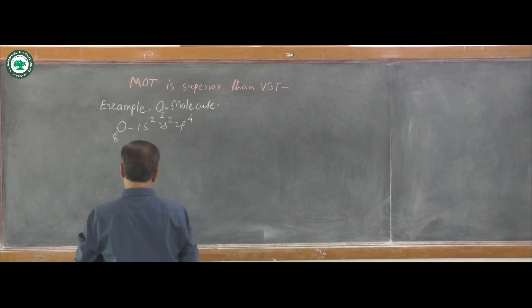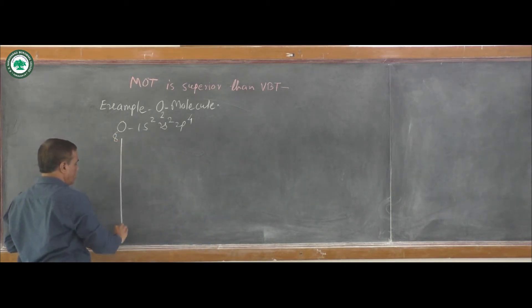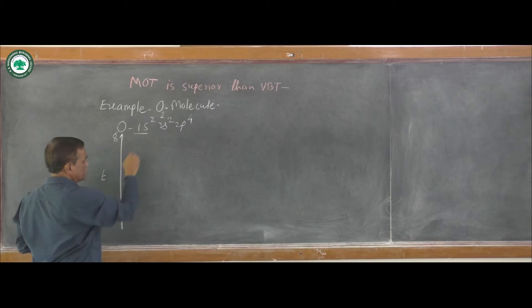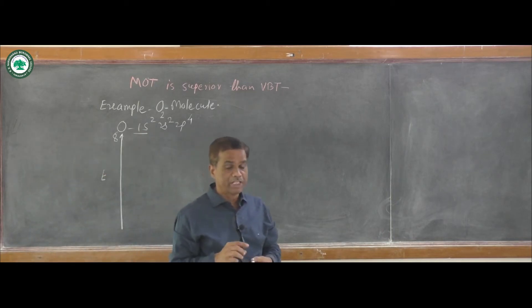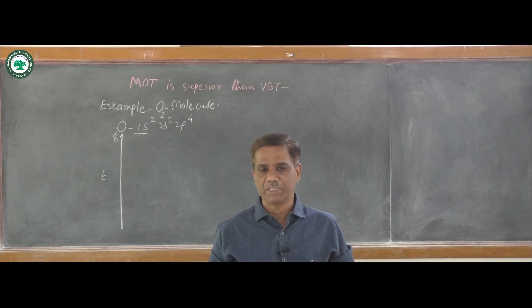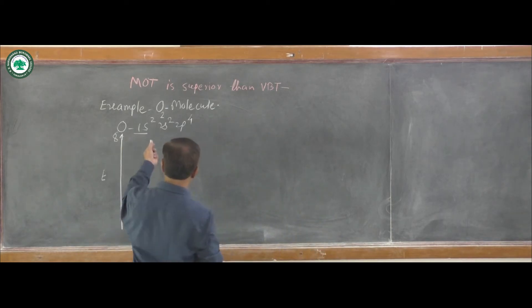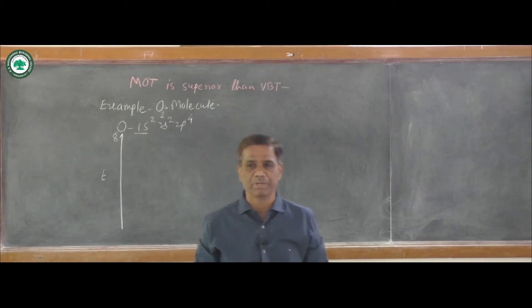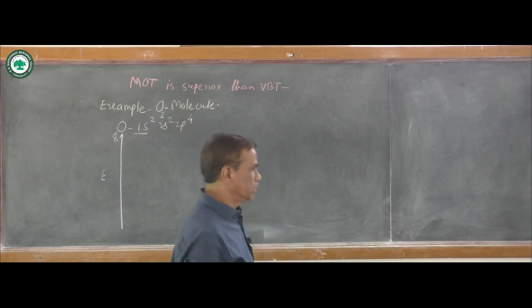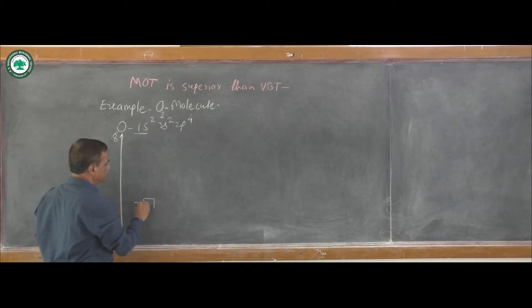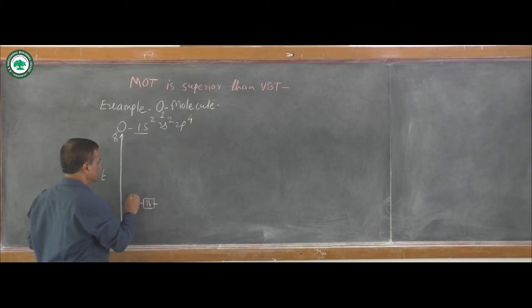If you draw the molecular orbital energy level diagram, the 1s orbital has lower energy compared to the 2s orbital. There is a large energy difference between 1s and 2s, therefore the 1s orbital is not considered — the reason is that it forms a non-bonding molecular orbital. Therefore we start from the 2s orbital, which contains two electrons.